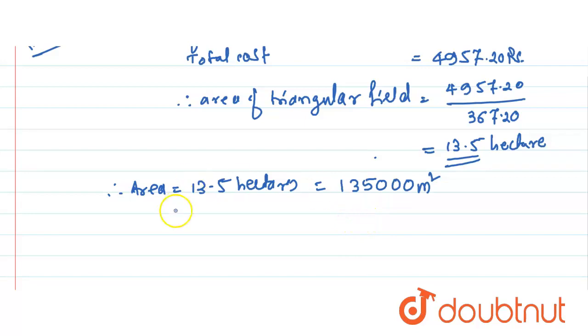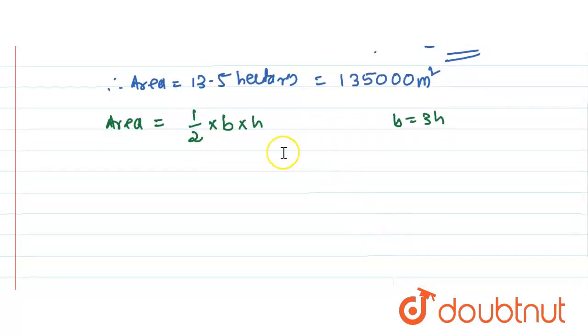Now we have the total area, but we know that area of this triangle is 1 by 2 into base into height. But what is base? Base is 3 times height, isn't it? So therefore substitute that value also. Area we have is 135000 equals